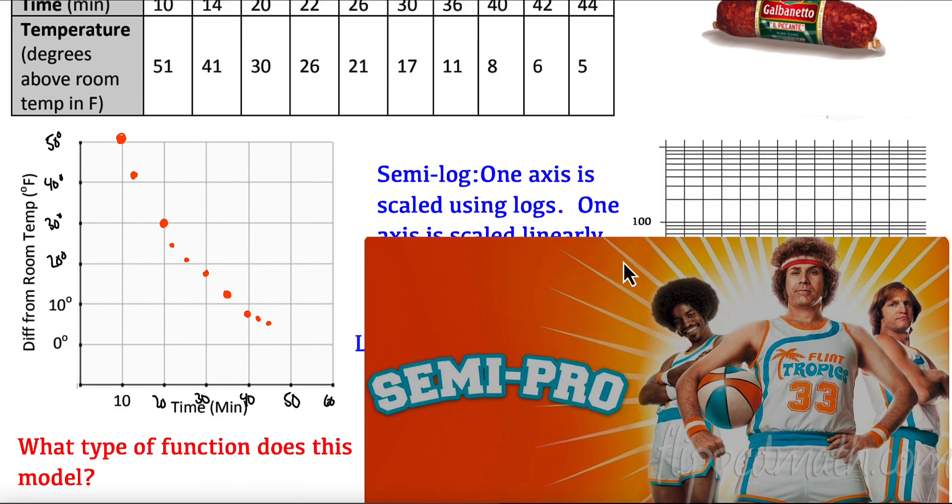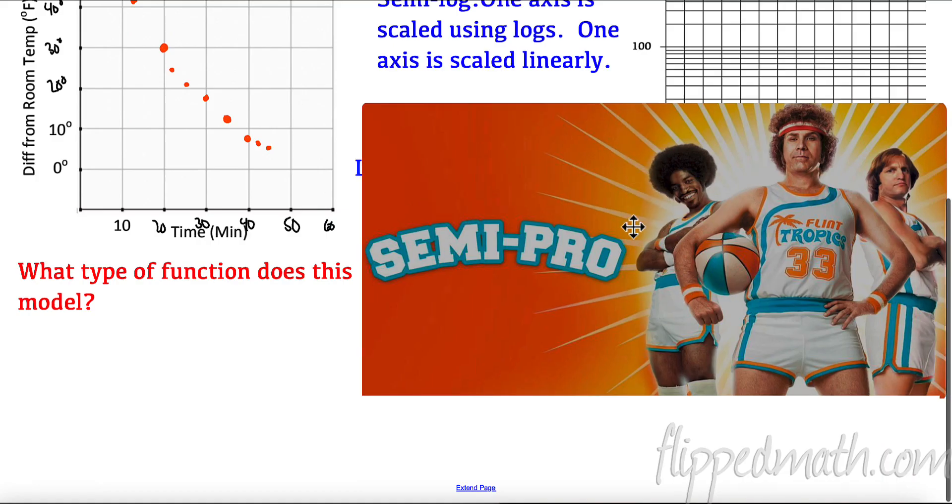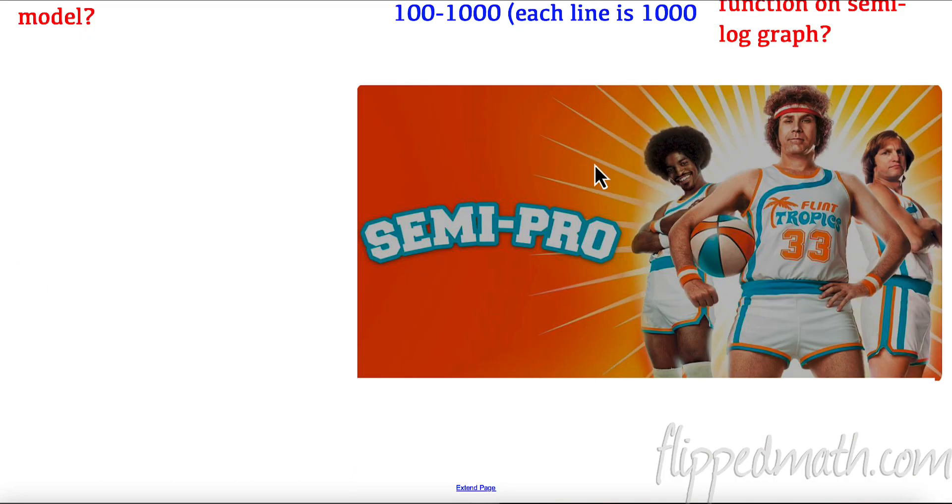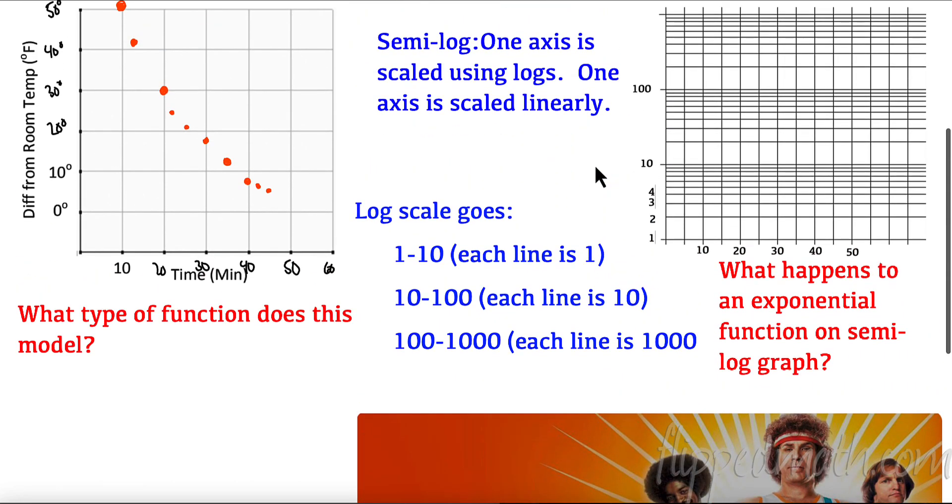So now we're going to look at something called a semi-log plot. Semi-log plots are a little bit different. It's called a semi-log plot because one axis is scaled using logs. So this is 10 to the first, which is 10. This is 10 to the second, which is 100. This is 10 to the third, which is 1000.